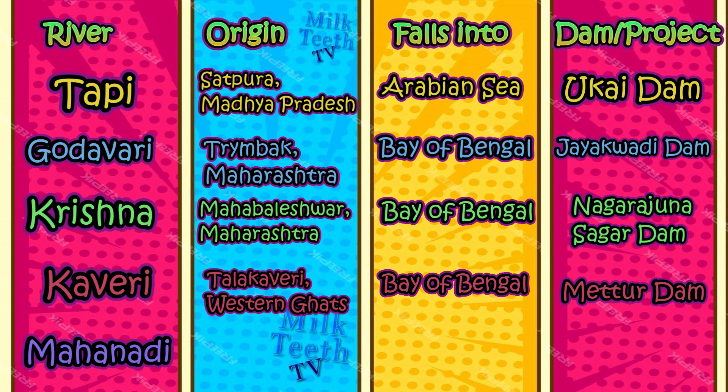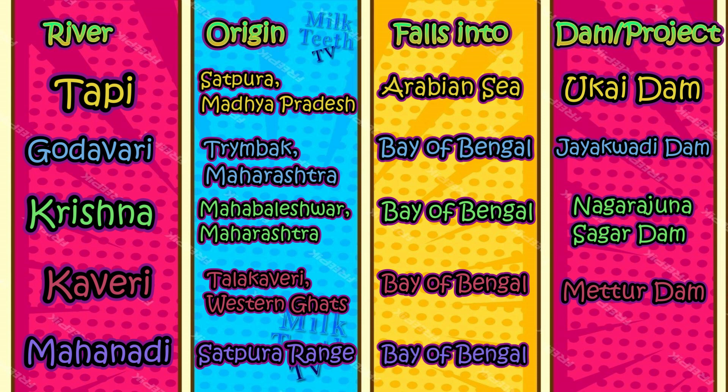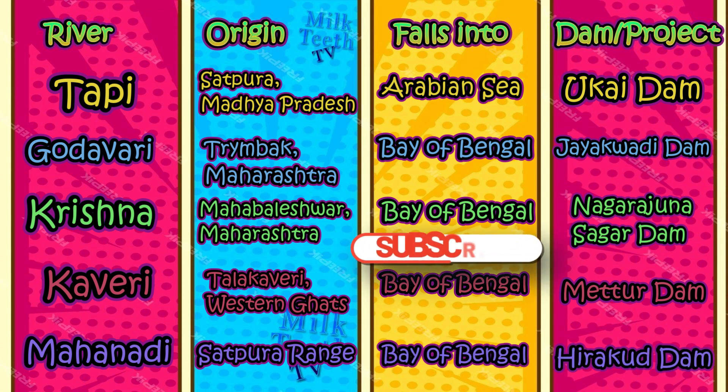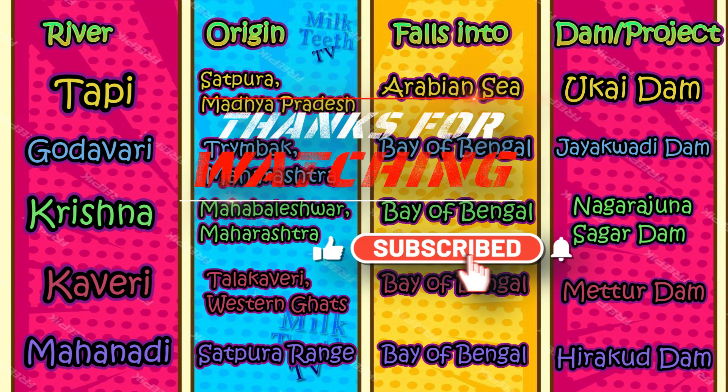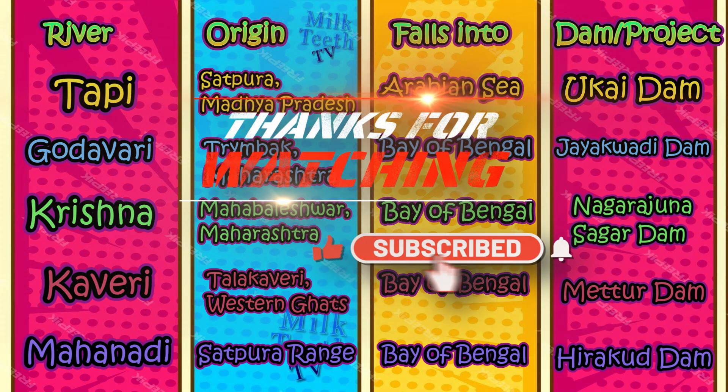Mahanadi: Mahanadi originates from the Satpura Range in Central India and falls into the Bay of Bengal. The famous Hirakud Dam is constructed over the River Mahanadi.